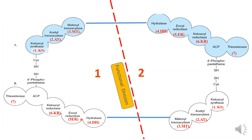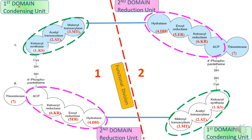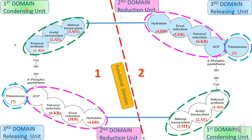Let us see what domains and enzymes are present in the fatty acid synthase system. The first domain is known as the condensing unit, present in both monomers. The second domain is known as the reduction unit, also present in both monomers. The third domain is known as the releasing unit.